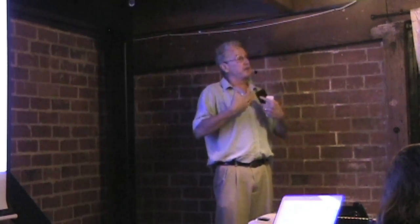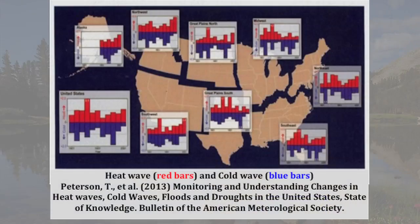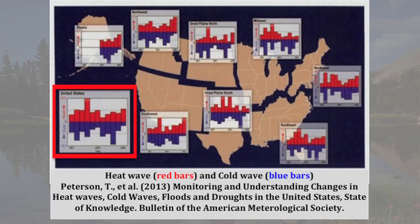That 1913 Death Valley record had nothing to do with solar energy or carbon dioxide — it had to do with natural climate change, amplified in an area that was very dry without any vegetation. A lot of people say we're going to have more heat waves because CO2 is causing heat to accumulate, that climate is 'on steroids.' But if you look at the data in the United States you don't see that. This was published in 2013 by about 15 top scientists, and you don't see every place suffering the same kind of heat wave.